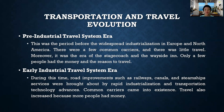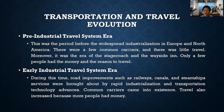For the early industrial travel era, road improvements such as railways, canals, and steamship services were brought about by rapid industrialization and transportation technology advances. Common carriers came into existence and travel also increased because more people had money.